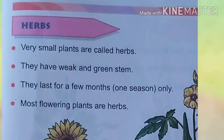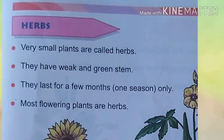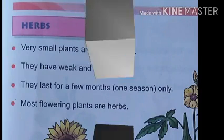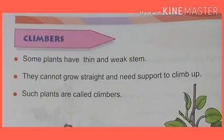Number three: Herbs. Very small plants are called herbs. They have a weak and green stem. They last for only a few months — one season only. This means herbs are seasonal plants. Most flowering plants are herbs. For example: ladyfinger, sunflower, tomato, and mint.